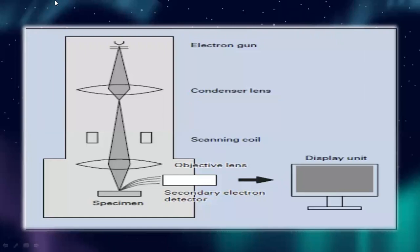This is a scanning electron microscope diagram. The electron gun feeds into a condenser lens, then a scanning coil, then an objective lens, then a secondary electron detector, and a specimen. The last component is the display unit.